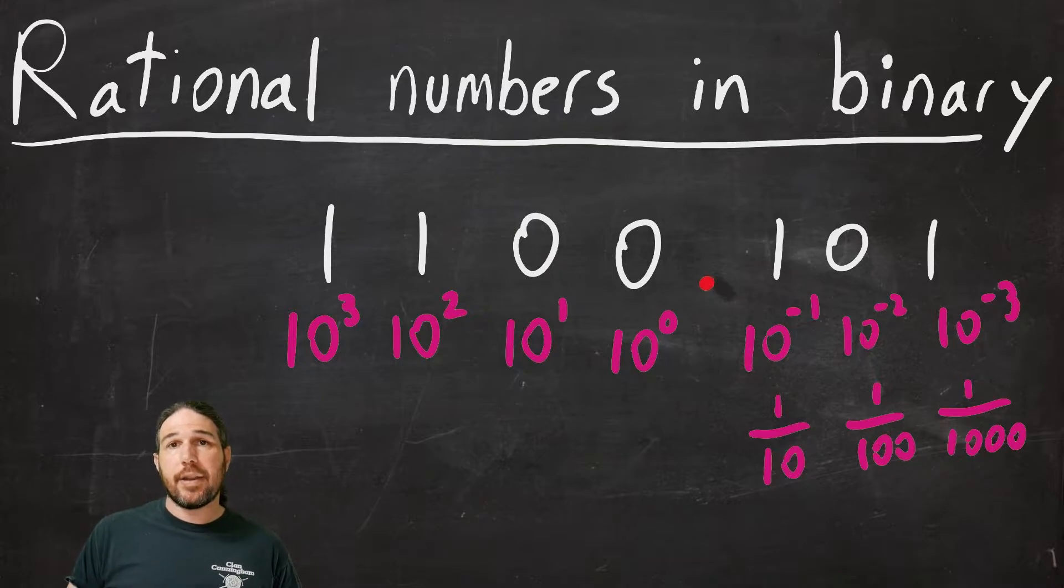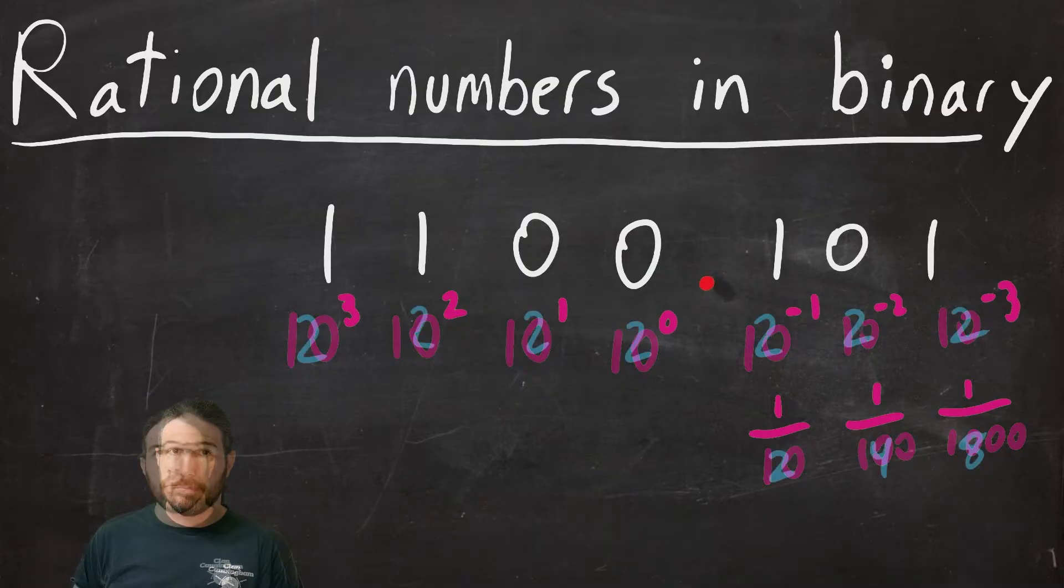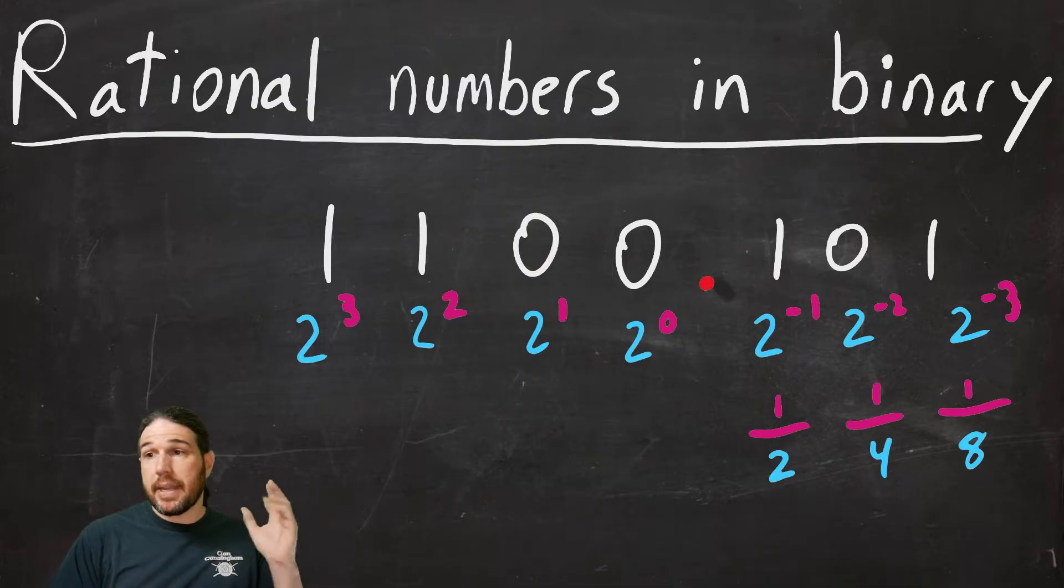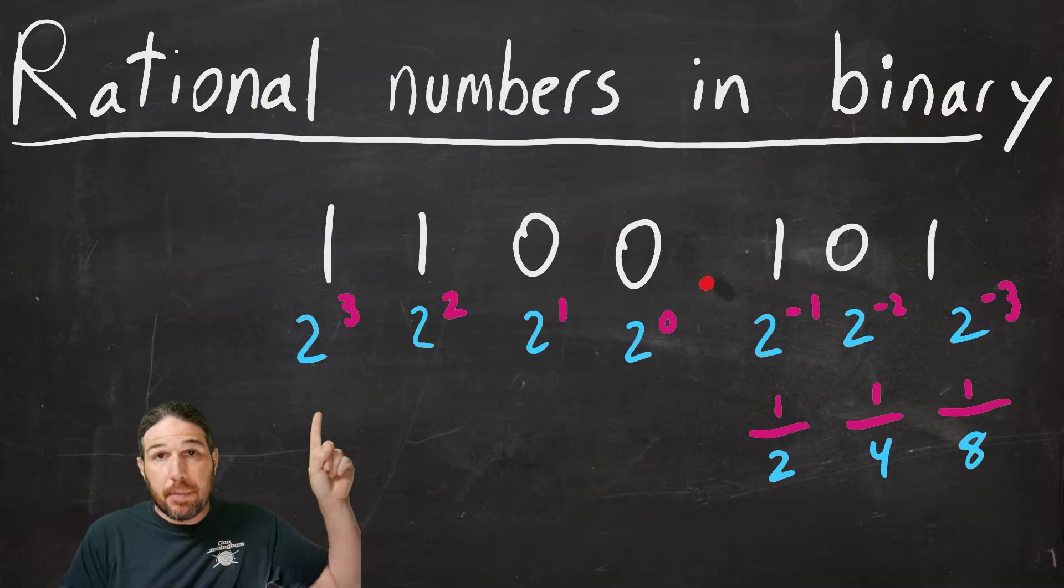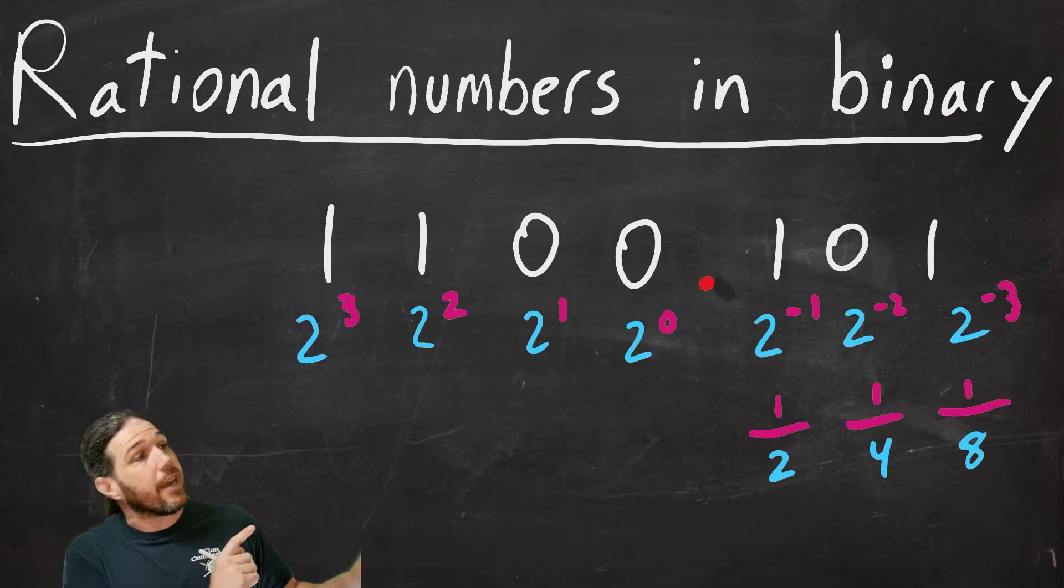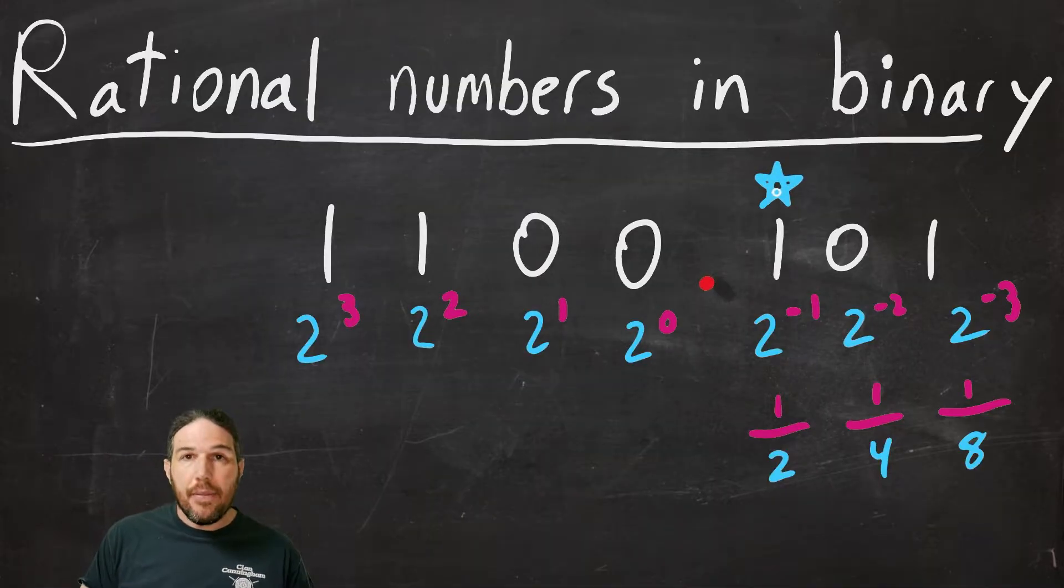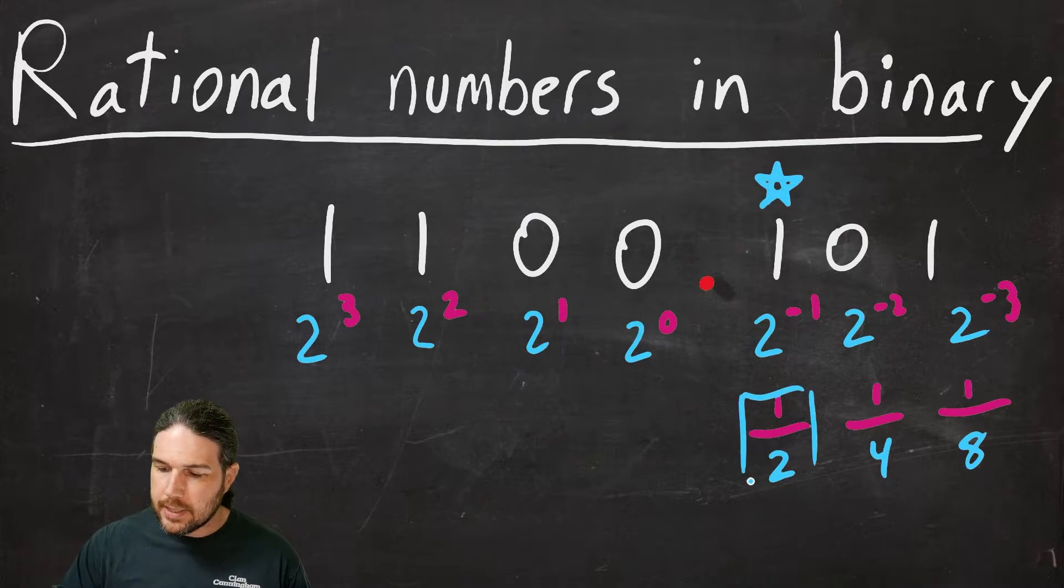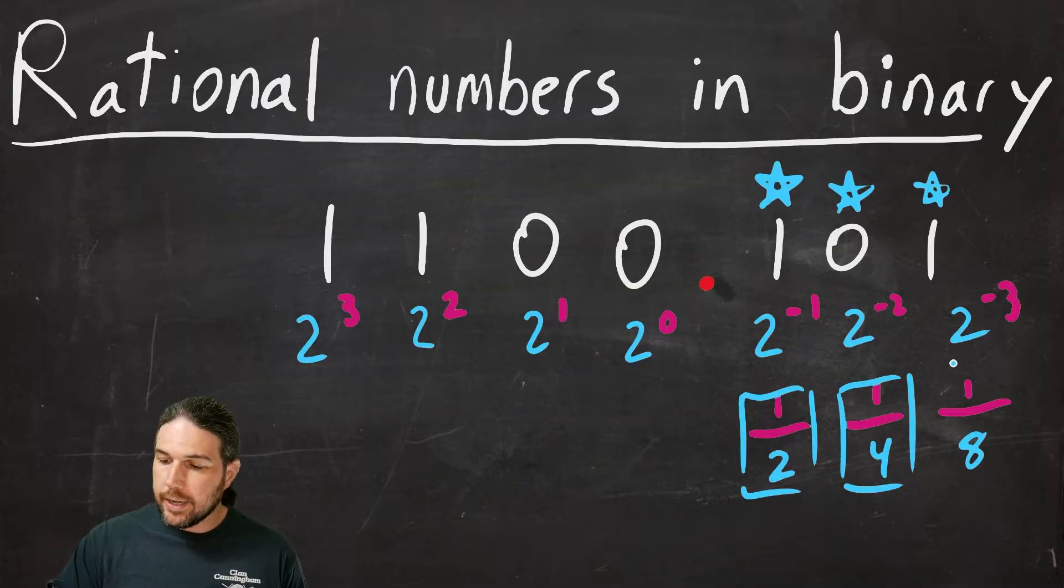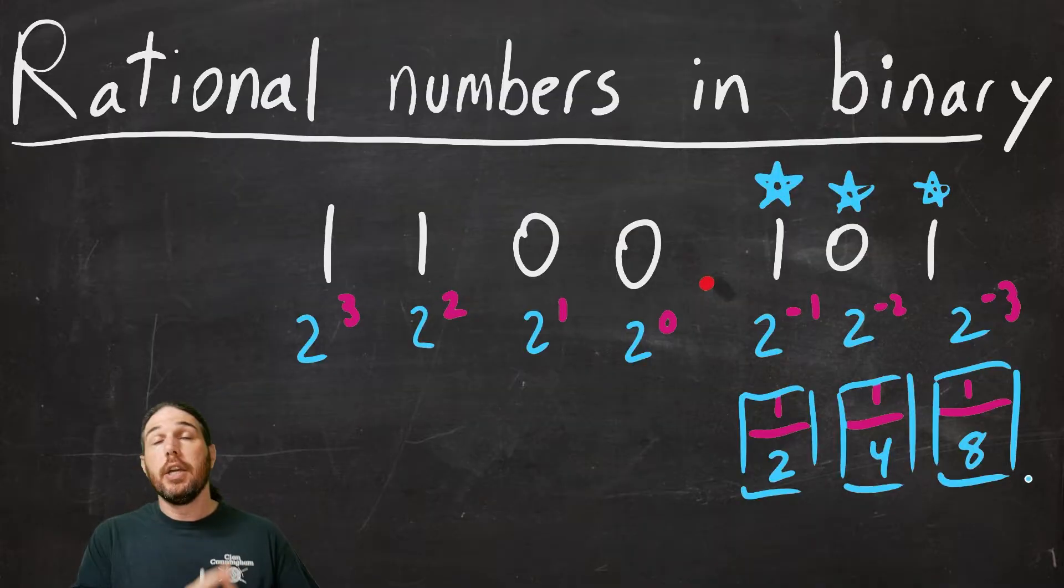Once again, the binary system works almost exactly the same, except instead of a bunch of tens, there's a bunch of twos. Here we see the same number in binary. Instead of this being the thousands place, ten to the third, this is the eight place, two to the third. But the pattern continues after the decimal point. So this spot here is no longer the tenths spot. It is the one half spot. This zero here is in the one fourth spot. This one here is in the one eighth spot. We are still able to represent any number, so long as it's rational, using binary, just like we can with decimal.